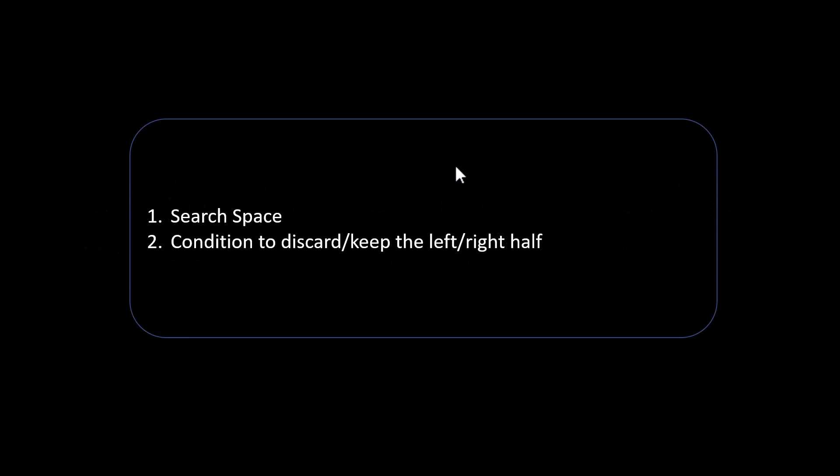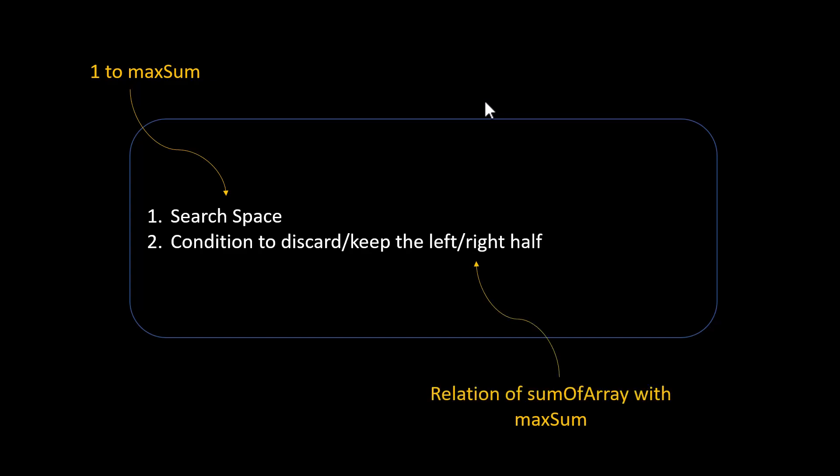For applying binary search, we need to keep two things in mind: the search space, and the condition in which we either discard or keep a particular left and right half, so that we are reducing the search space by half in each iteration. Our search space lies from 1 to max sum. The condition to discard half is based on the sum of the current array — if the sum with the particular number is exceeding the maximum, we are in the wrong half and need to go to the lower end, and vice versa.